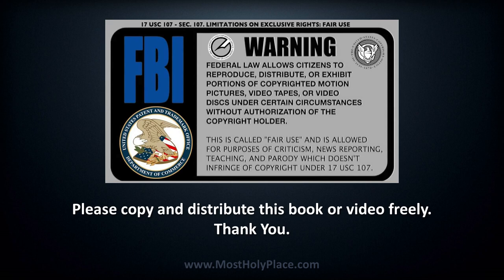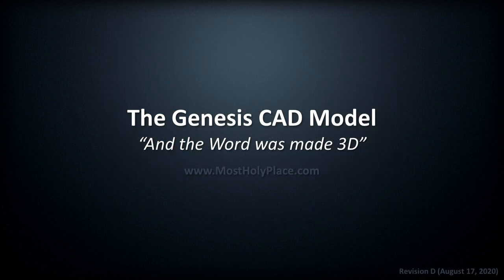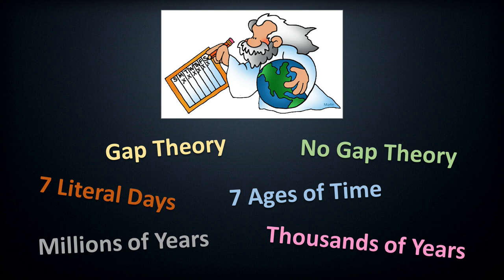Please copy and distribute this book or video freely. The Genesis creation story has been a topic of debate for centuries. The simple yet somewhat vague verses describing how the heavens and earth were created has led many to vastly different conclusions. Some believe there was a large gap of time between Genesis 1 and 2, while others do not. Some believe the seven days of creation were literal 24-hour periods, while others believe each day represented a very long period of time. Some believe earth is millions of years old while others believe it to be only a few thousand.